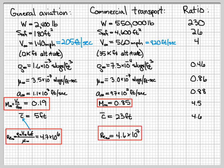We do the same thing for the commercial transport, and you'll find that it's 4.6 times 10 to the 7, so 46 million, for a factor of about 10. The Reynolds number is about 10 times greater for the commercial transport.